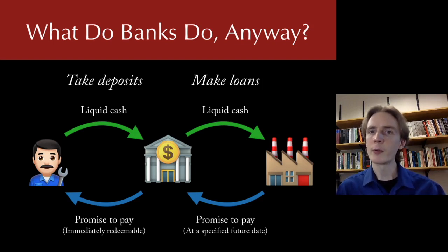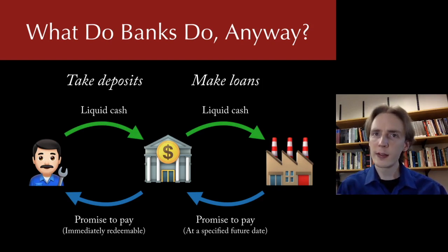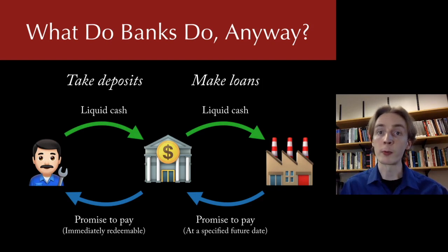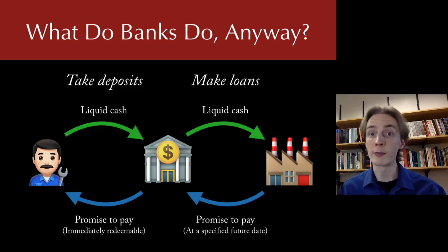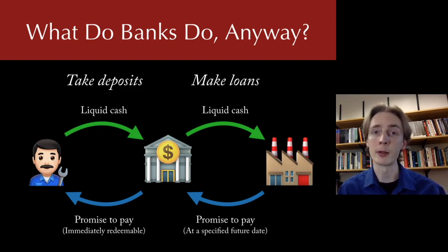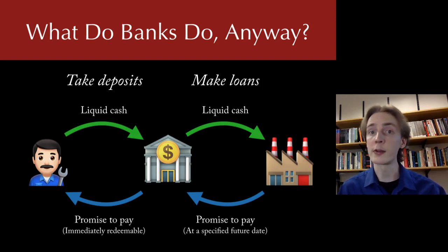This is why banks are sometimes called intermediaries — they're intermediating funds. They allow you to deposit your funds and then use those funds productively to create value, passing some of that created value back to you in the form of interest on your deposits. Banks are bearing risk because you don't want to lend directly to companies making productive projects — that's too risky for you. You just want your money available and maybe earn a little interest. So banks take that money, lend it to productive projects, and bear the risk of making a short-term promise to you while receiving a long-term promise from the borrower.